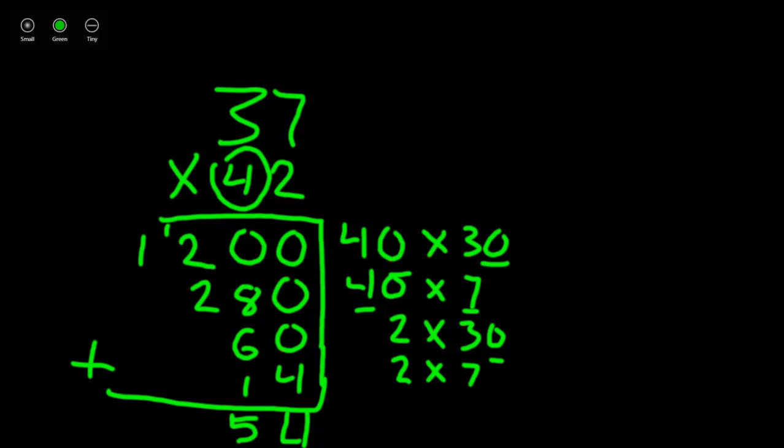Now we have 2 plus 2, which is 4, plus the 1 more we carried over is 5. And 1 is brought down in our 1,000's place, or in our last column. Our answer is 1,554.